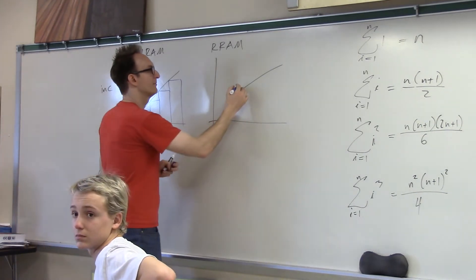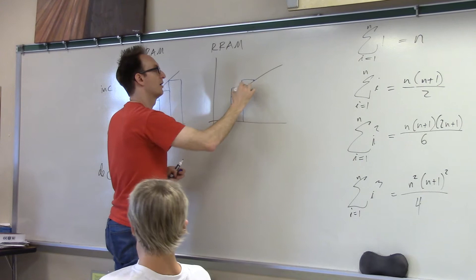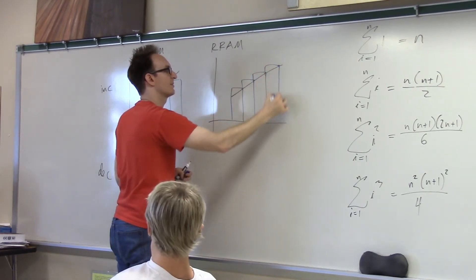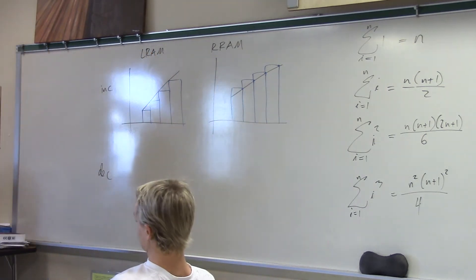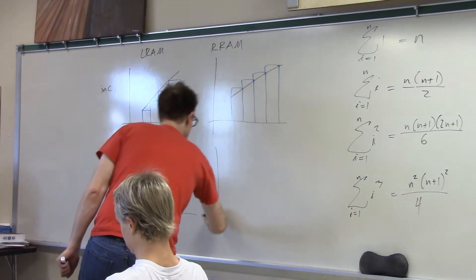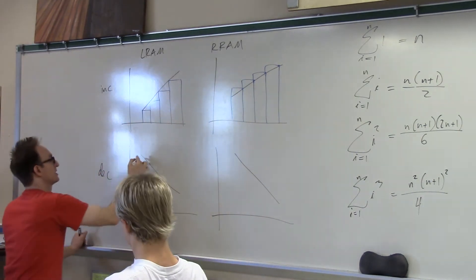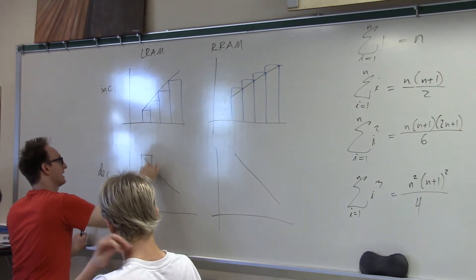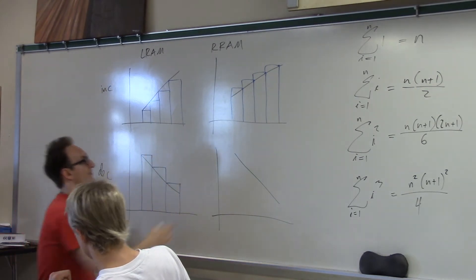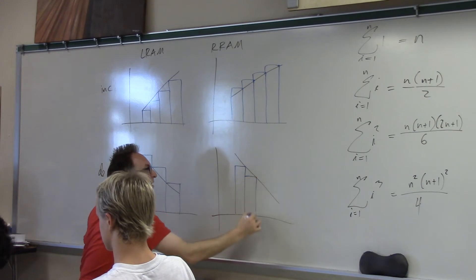And if I'm using RRAM, then for every subinterval, I am using the right-hand endpoint of the subinterval to construct my rectangles. And now I'm going to get an overestimate. And for decreasing functions, it's just the opposite. Now, if I use the left endpoint, I get an overestimate. And if I use the right endpoint, I get an underestimate.